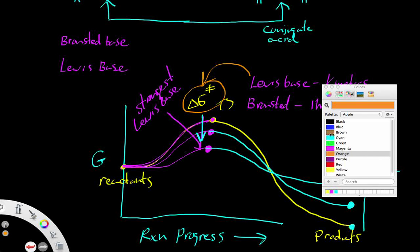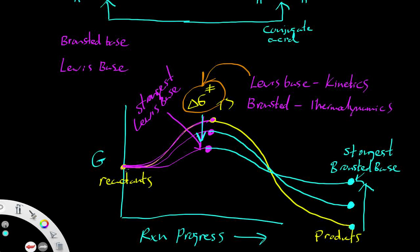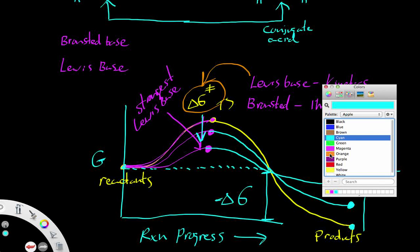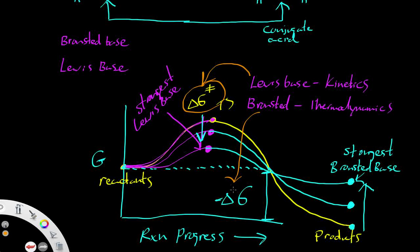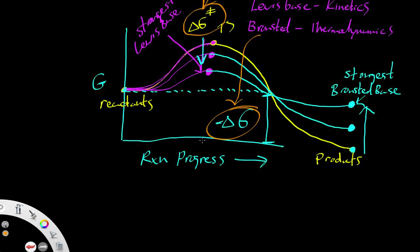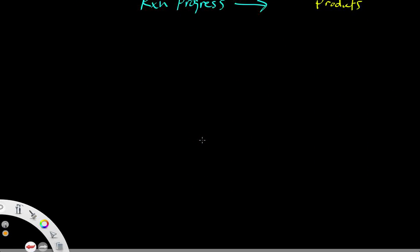Delta G can be traced from where we started to where we finished — starting at higher energy and ending at lower energy implies a negative delta G. That relationship between starting and ending energy is what the Brønsted base refers to. So: Brønsted base refers to delta G, while the Lewis base refers to delta G double dagger, or the transition state. Now let's move forward and show some examples.